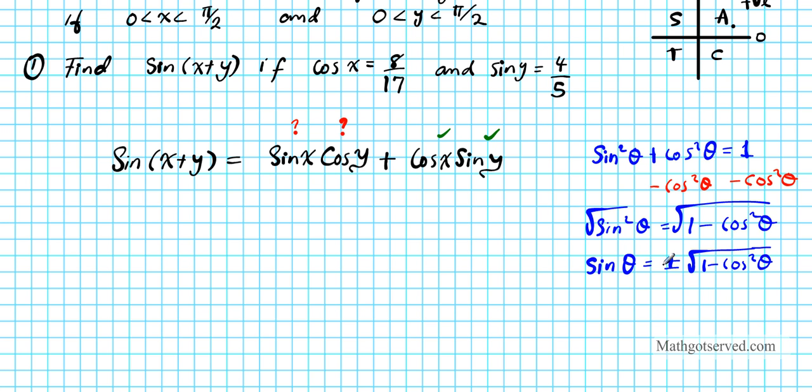So this equation helps me find sine if I know cosine. And if I want to find cosine if I know sine, I'll just switch both of them and I'll have cos θ equals plus or minus the square root of 1 - sin²θ. These are derivatives of this Pythagorean identity.